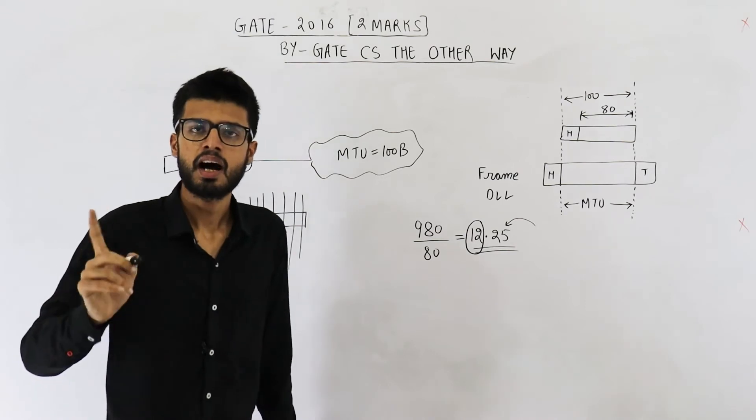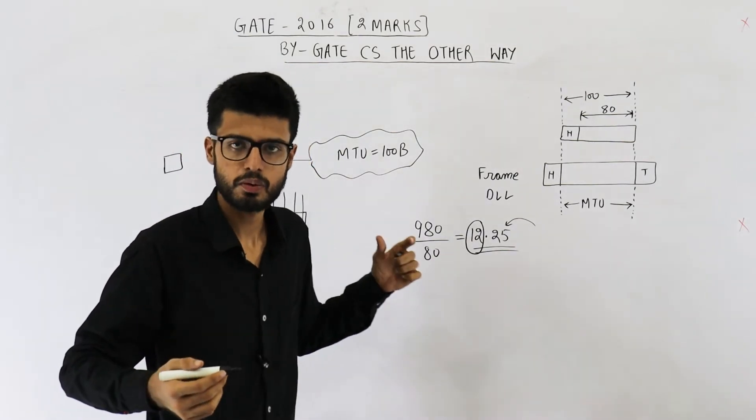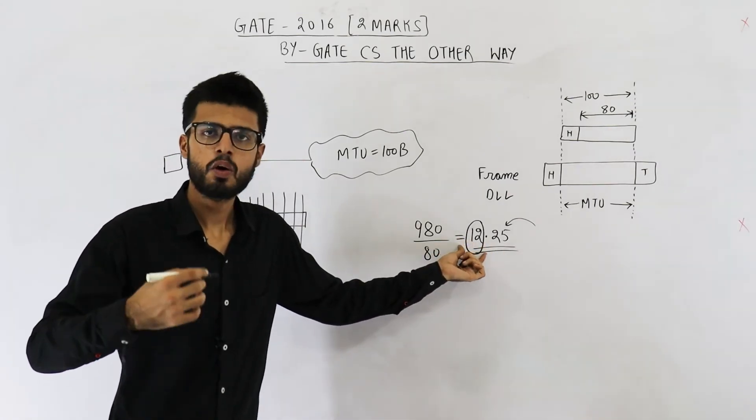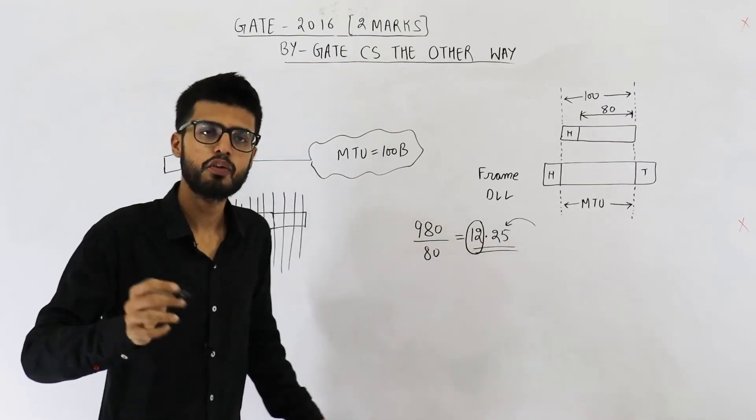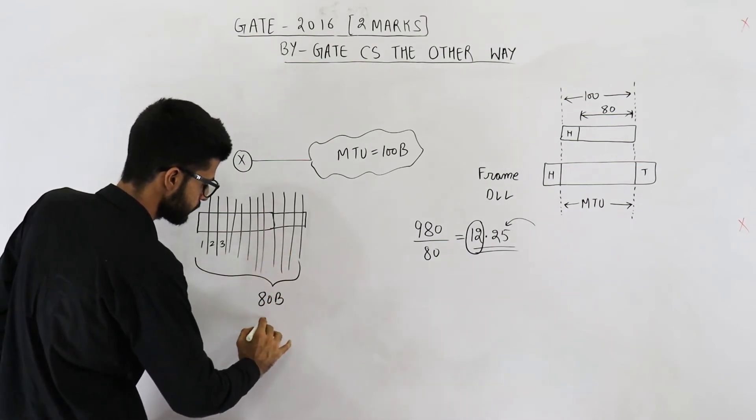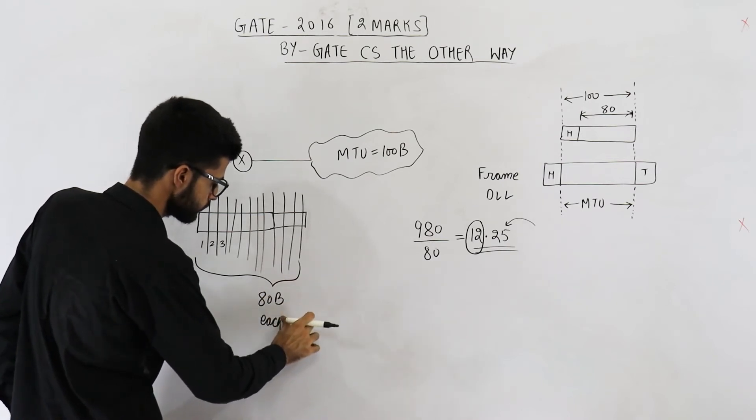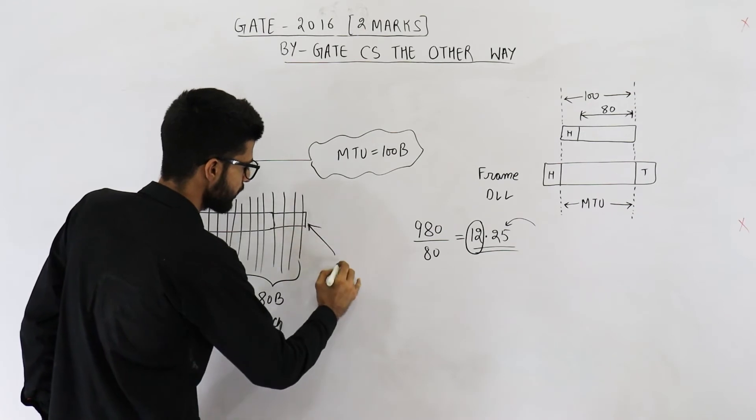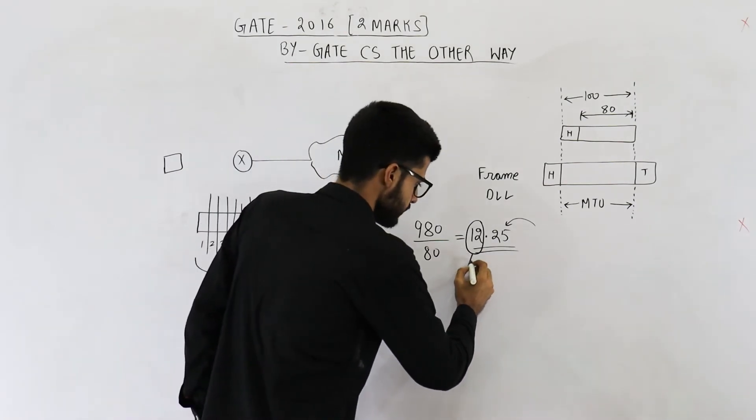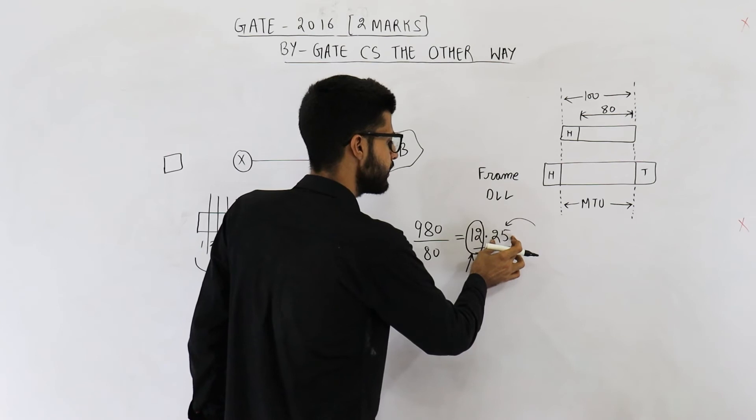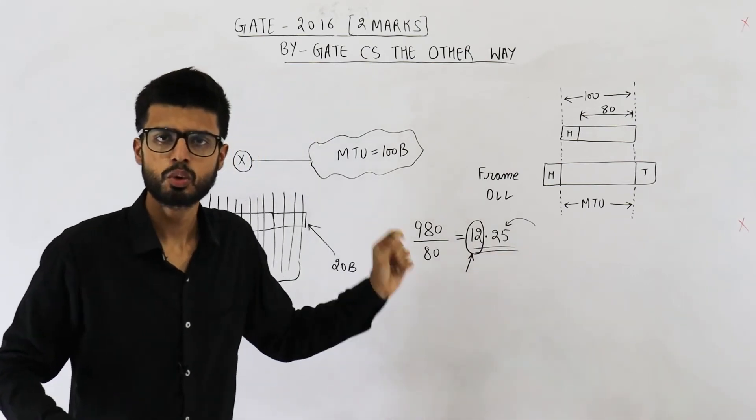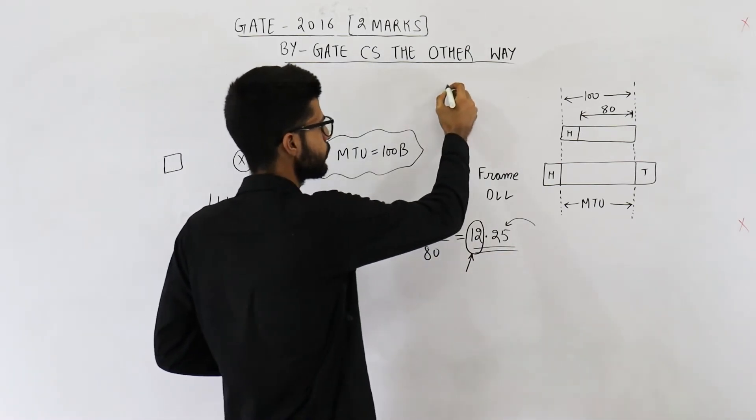So 13 fragments will be created, answer to this question is 13. Please don't say it is 12 fragments. See, 12 fragments are of complete 80 bytes, 13th fragment is only of 20 bytes. But still it is a fragment, so we have to consider it. Total fragments created is 13, answer to this question is 13.